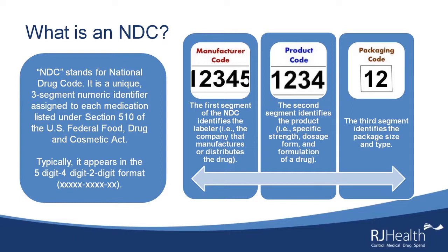Each drug product will have its own 11-digit code, broken down into three segments: the manufacturer code, which is tied to an individual manufacturer; the product code, which is an internal segmentation grouping different products by strength and dose; and thirdly the package code, which identifies different package sizes.